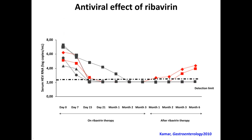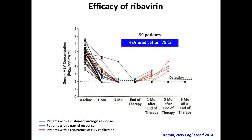An important point is the treatment of hepatitis E, which concerns mainly chronic hepatitis E. In 2010, we demonstrated for the first time an antiviral effect of ribavirin. Since ribavirin was the main treatment alongside interferon for hepatitis C, we conducted a study and showed that ribavirin in monotherapy can eradicate the virus — six out of eight patients were cured after three months. We confirmed this efficacy in a French multicentric study of 59 patients, with an HEV eradication rate of 78% after three months of ribavirin monotherapy.